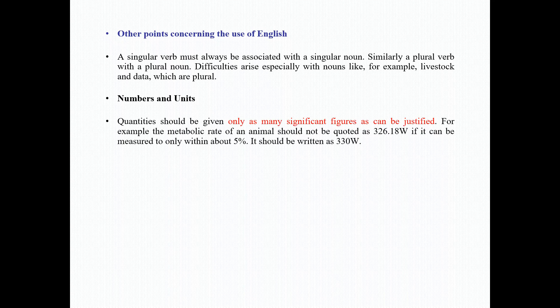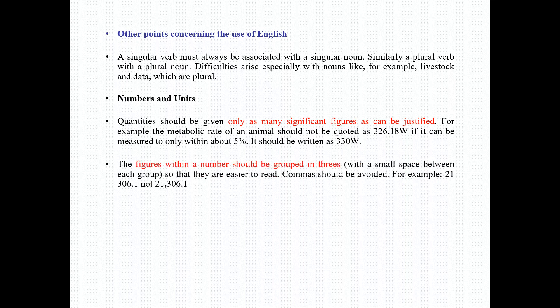Numbers and units: Quantities should be given only as many significant figures as can be justified. For example, the metabolic rate of an animal should not be quoted as 326.18W if it can be measured to only within about 5%. It should be written as 330W. The figures within a number should be grouped in threes with a small space between each group so that they are easier to read. Commas should be avoided. For example, 22,306.1 should be written as 22 306.1, not 22,306.1.